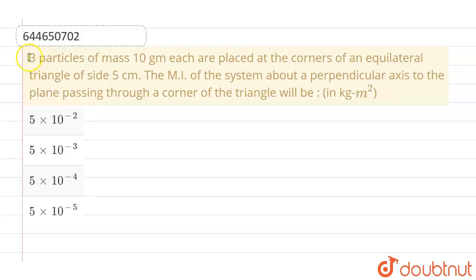Hello everyone, if we talk about this question, this given question is: three particles of mass 10 gram each are placed at the corners of an equilateral triangle which is having a side of 5 cm.